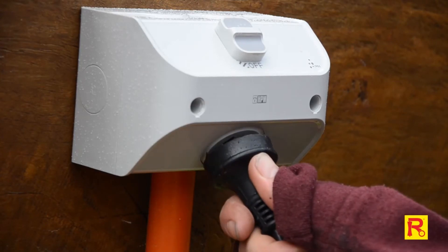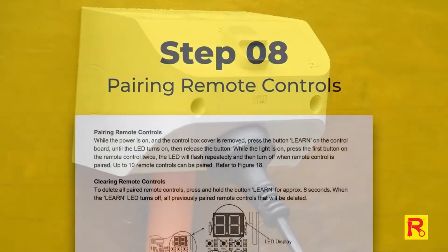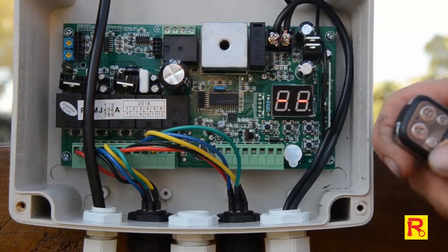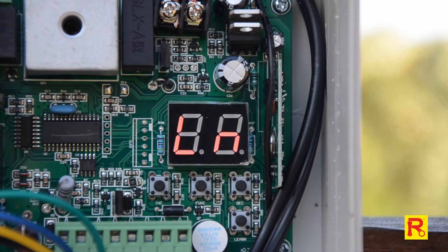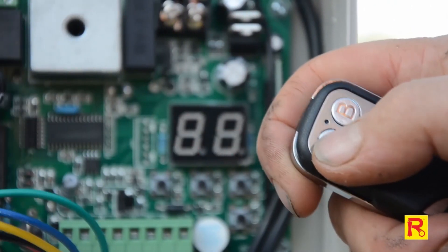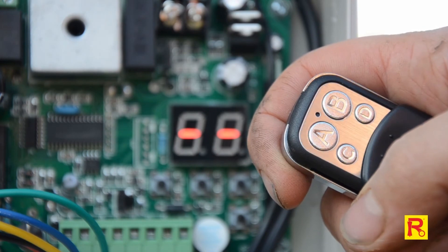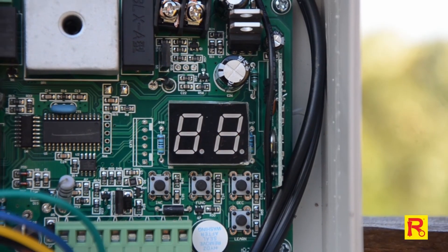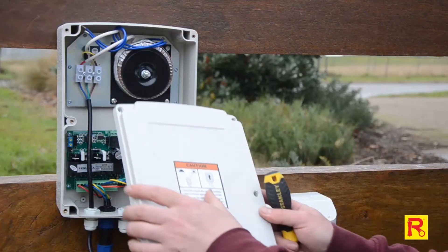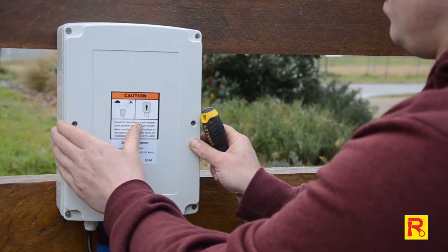Now, turn on the unit to pair a remote. To pair a remote, press and hold the button marked LEARN until the LED light goes on, then release. Now, press the first button on the remote control twice. The LED will flash and then turn off. Your remote is now paired. Now, replace the cover for the control box.